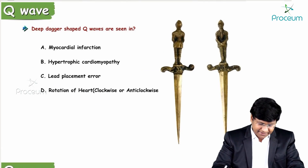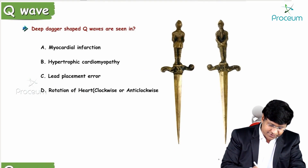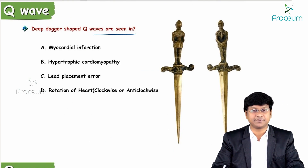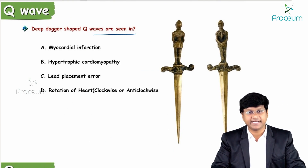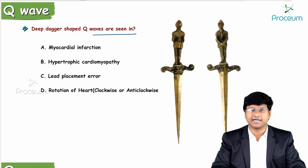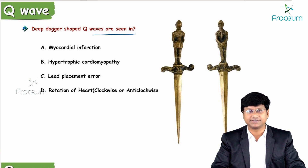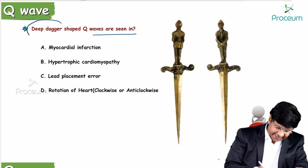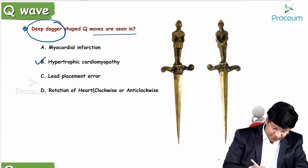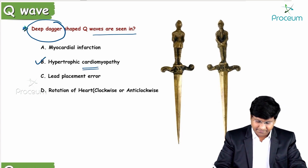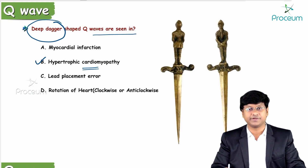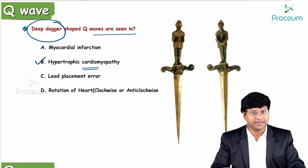Next question: deep dagger-shaped Q waves are seen in which condition — myocardial infarction, hypertrophic cardiomyopathy, lead placement error, or rotation of the heart? Deep dagger-shaped Q waves are seen in hypertrophic cardiomyopathy.